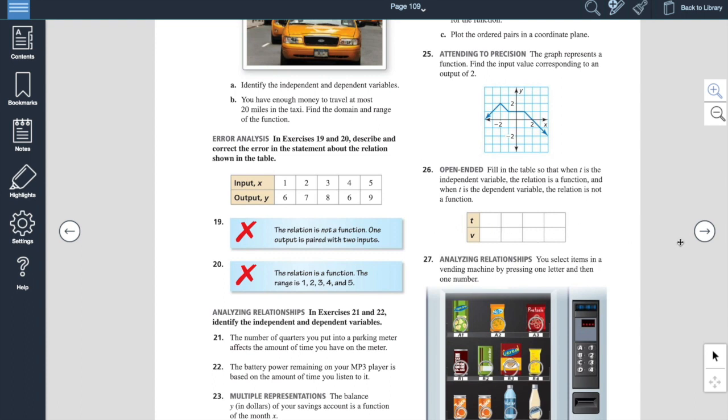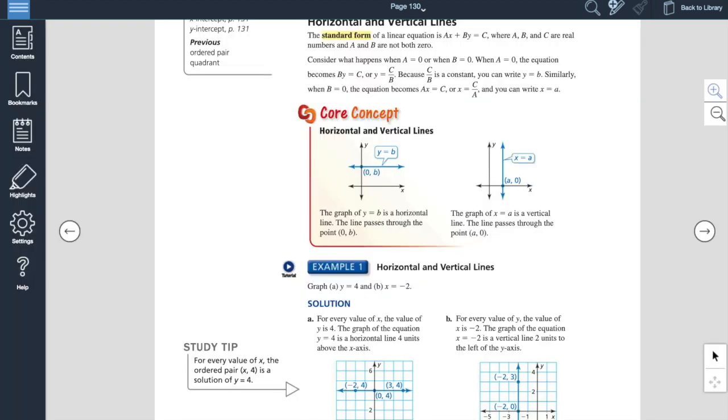Then we look at section 3.4. So 3.4, you're going to have to go back up here to your page, and we're going to go to page 130. For this one, we're going to look at linear equations in standard form. So remember, standard form was the ax plus by is equal to c. And with this, a couple key things.